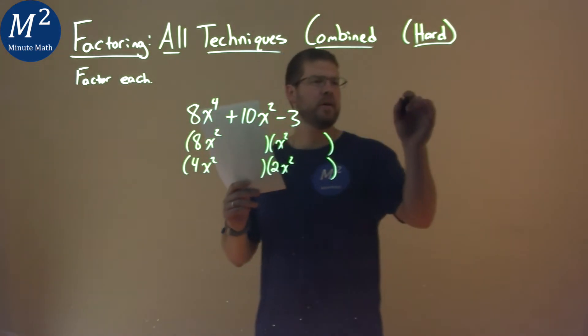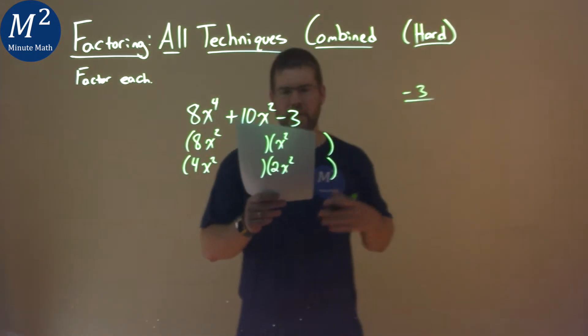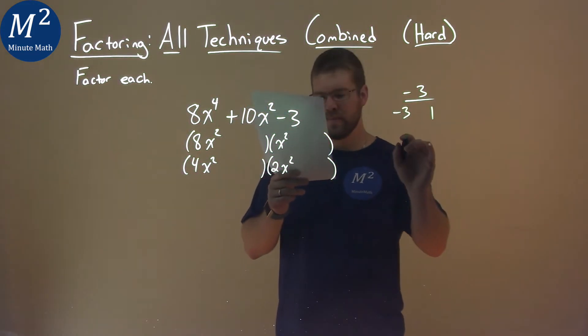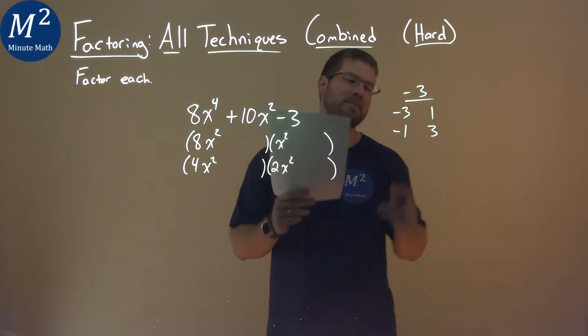Luckily our c value is a small number, negative 3. We're going to find the pairs of numbers that multiply to negative 3: negative 3 and positive 1, and negative 1 and positive 3.